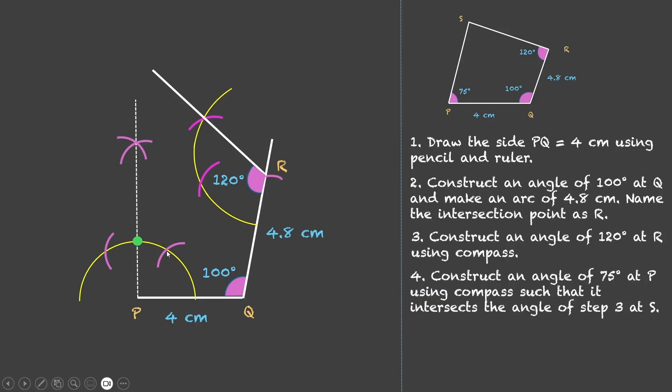Now keep your compass at this point and make one arc. Let us draw it in a different color. Next we will keep our compass over here. This is the 90-degree angle. And then draw another arc. Wherever these two intersect, that is our 75-degree angle. So you got 75 degrees.